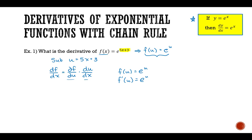The second part of the chain rule is computing du/dx. If u = 5x + 3, then u' = 5. The derivative of 5x is 5, and the derivative of 3 is 0.